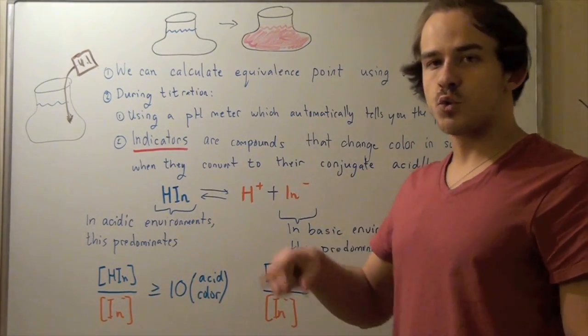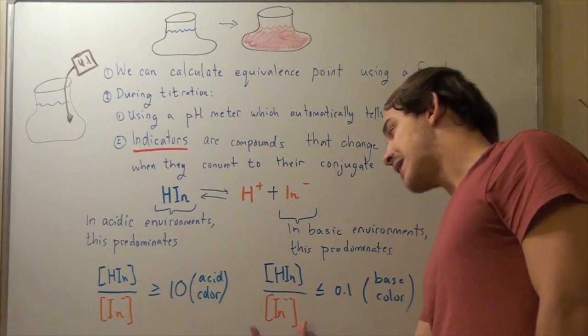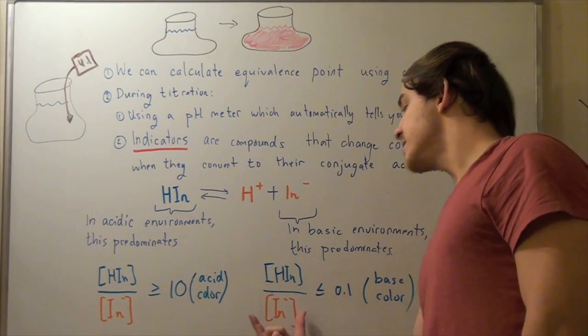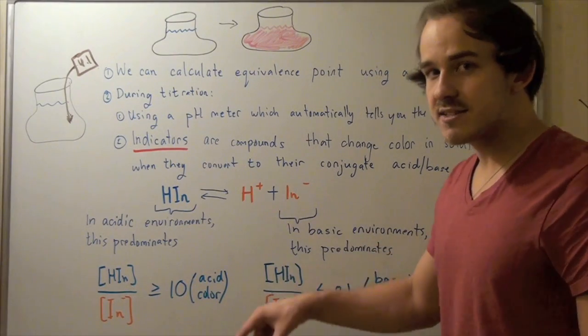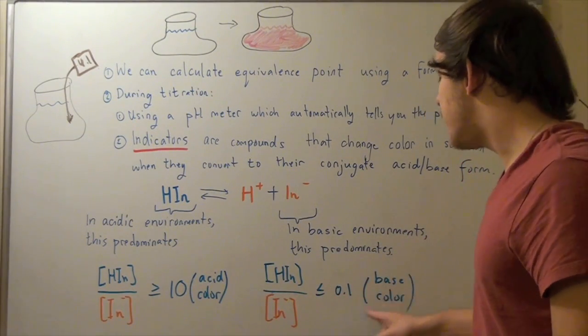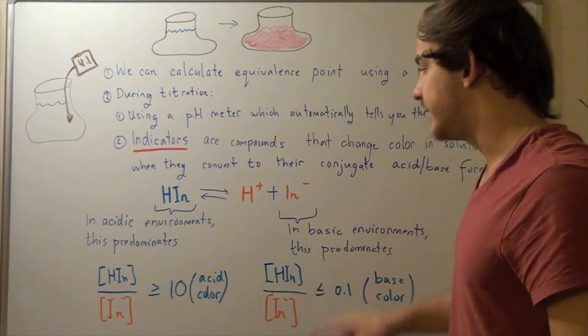Now, the opposite is true as well. When this guy will dominate, when there's more of this guy than this guy, now ratio is 0.1 or less, that means the base color will dominate. So, this guy will dominate.